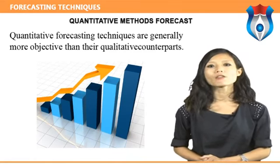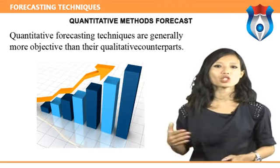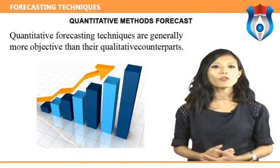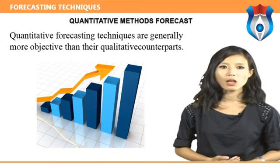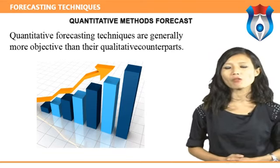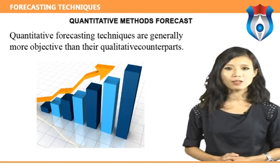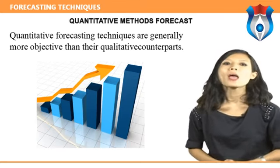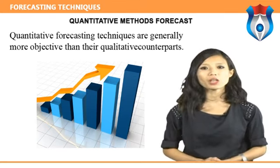Quantitative methods forecast: quantitative forecasting techniques are generally more objective than their qualitative counterparts. Quantitative forecasts can be time series forecasts — that is, a projection of the past into the future — or forecasts based on associative models, that is, based on one or more explanatory variables. Have you ever heard of an occupation that rewards an employee for being wrong? Surprisingly, a demand forecaster can be wrong and still remain in the company's good graces.